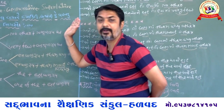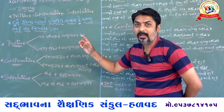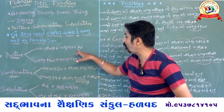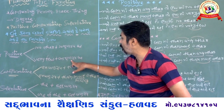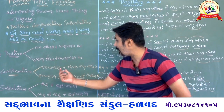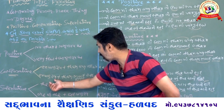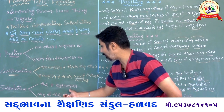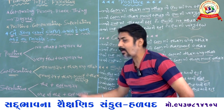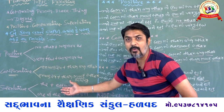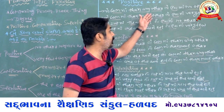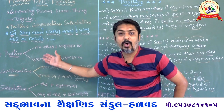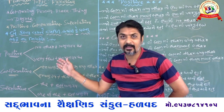But some words — actually adjectives — cannot take 'er' or 'est.' For those adjectives, orally in exams: beautiful → more beautiful → most beautiful; intelligent → more intelligent → most intelligent; innocent → more innocent → most innocent; excellent → more excellent → most excellent. All adjectives whose 'er' or 'est' form cannot be made take 'more' and 'most.' Everyone understood the complete structure?